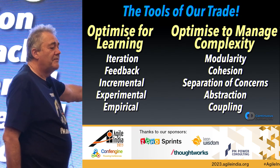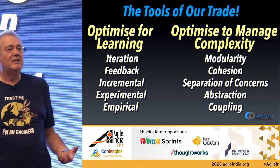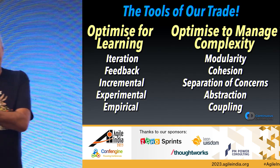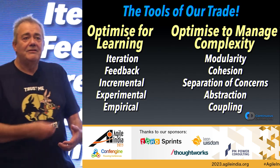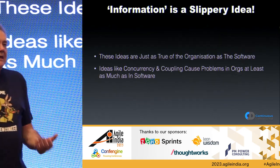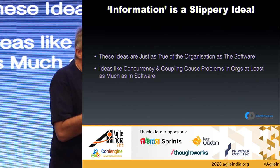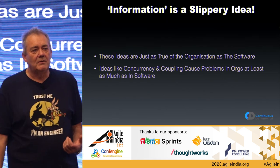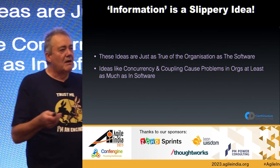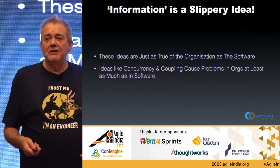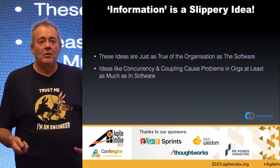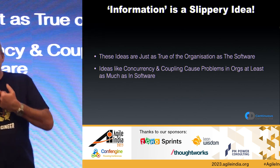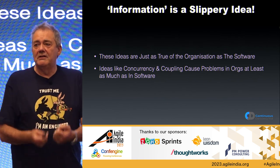To manage complexity we need ideas like modularity, cohesion, separation of concerns, reducing coupling, and abstraction — so we can make changes in one part of a system without worrying about another part. That allows us to move more quickly. When we talk about scaling, information is a slippery idea. There's information in our organization and the way teams interact with one another, and the problems are the same. A team is an information system, and the ways teams interact have the same problems of concurrency and coupling.